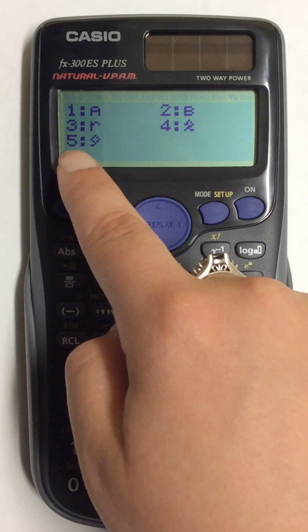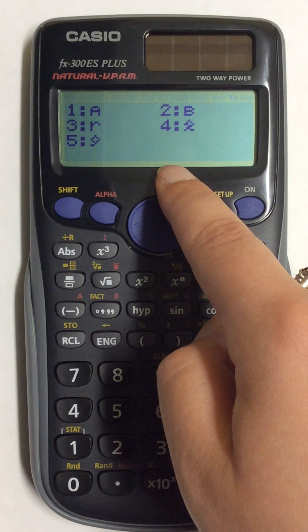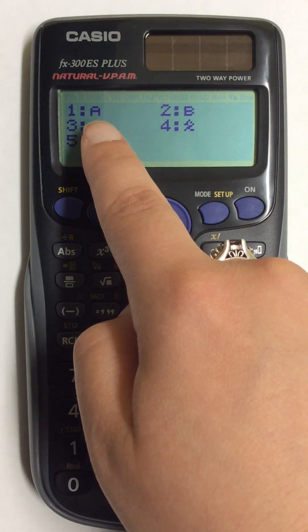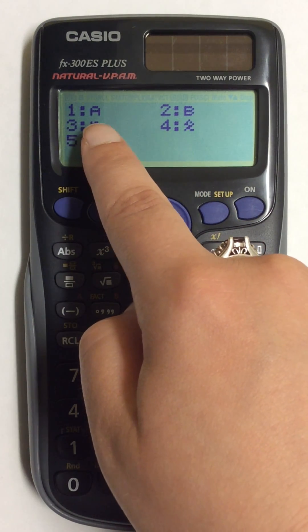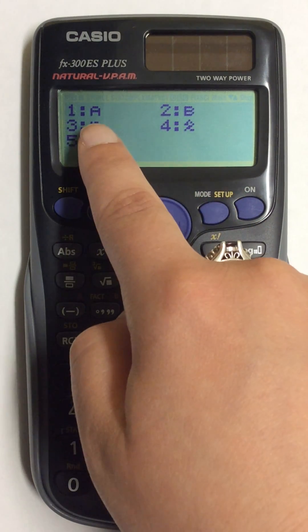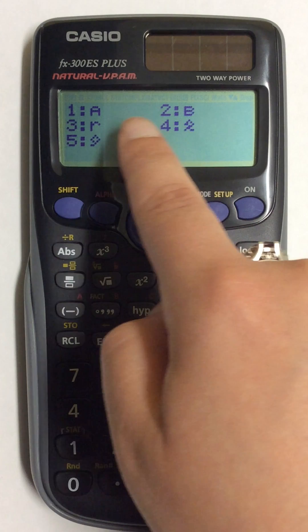So now this next screen shows, and the values for your regression line are going to be A and B. So A is going to be your y-intercept, and B is going to be your slope. You'll need to find each of these separately.